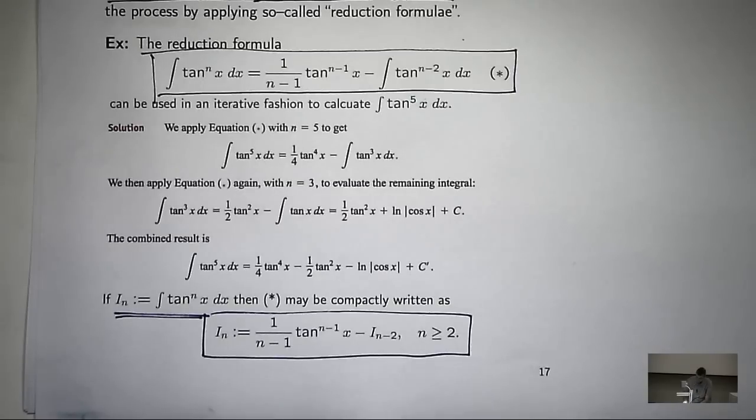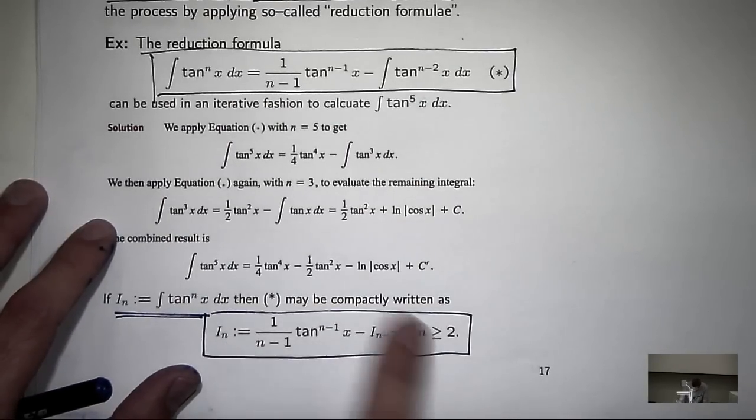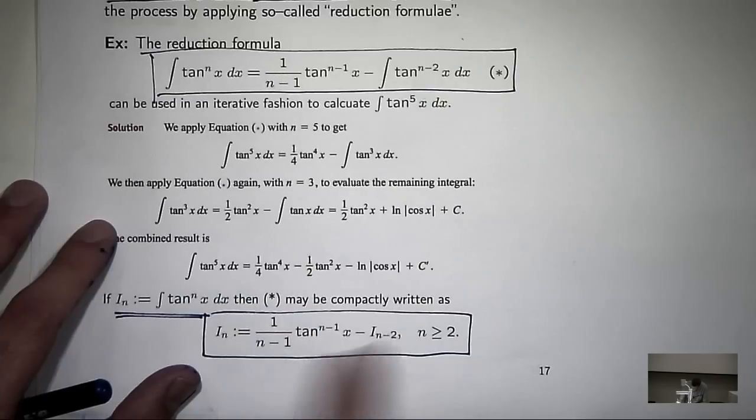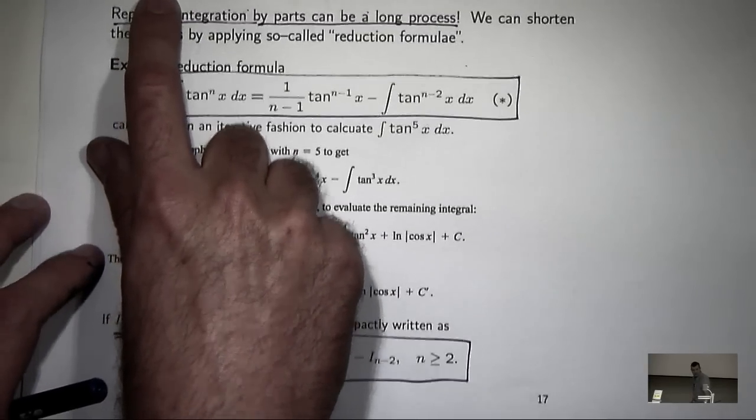The point here, and this is why they're called reduction formulae, is that if you have an n over here, you've got to have n minus 1 or n minus 2 or n minus 3 or something over here. It can't be greater. That's why it's called a reduction formula.